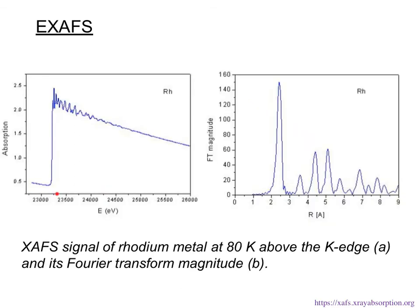Here's a rhodium sample. This is the raw data coming out of the absorption: we see the pre-edge, the edge, and then past the edge a relatively featured spectrum. You might expect that since the electron is going into the continuum and escaping into the environment there would be no features, but these features arise because electrons behave as waves. We take the Fourier transform of this part of the spectrum and see peaks at different radii — the spatial domain — corresponding to rhodium atoms at different distances. The actual work to determine what this data means requires a lot of trial and error and fitting, much like X-ray crystallography.